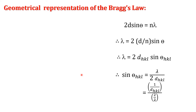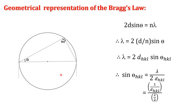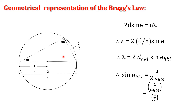This sin term we represent geometrically by using a circle. In that circle we draw a right-angled triangle. In that geometry, the diameter of the circle is taken as the hypotenuse of the triangle, and its diameter we write as 2/lambda. Therefore, the perpendicular component is 1/d for a given plane (h, k, l) and the opposite angle is theta. The radius of the circle is taken as 1/lambda. Using that geometry, it satisfies Bragg's law.